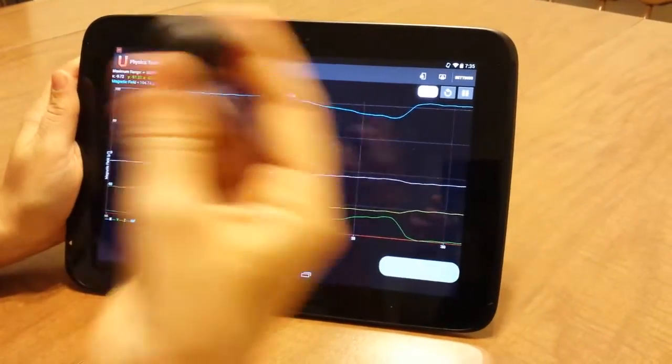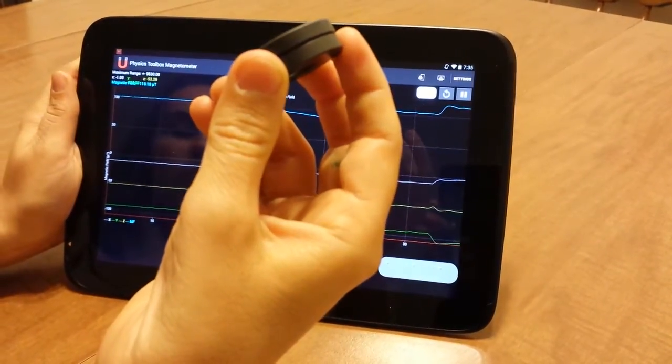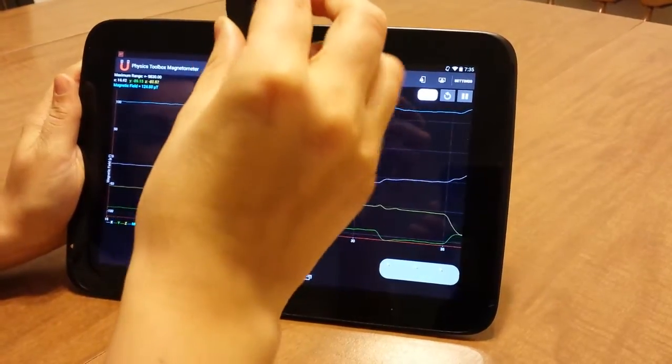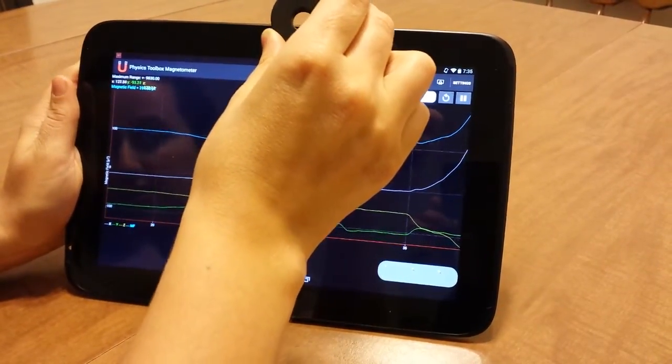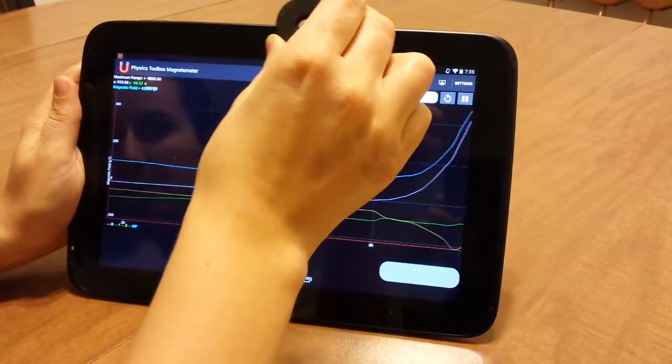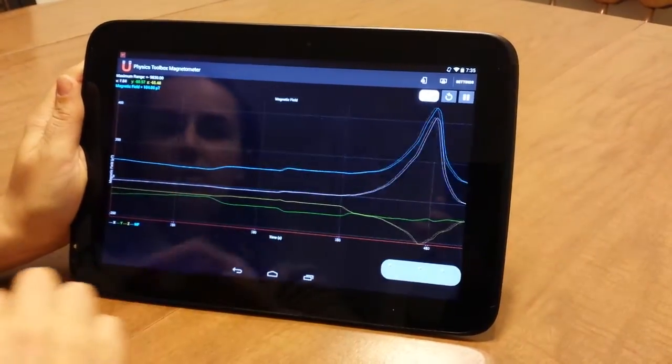I could even take a magnet, and you'll already see it's being picked up, and I could try decreasing the distance and seeing the influence on the magnetic field sensor, which again is pretty significant.